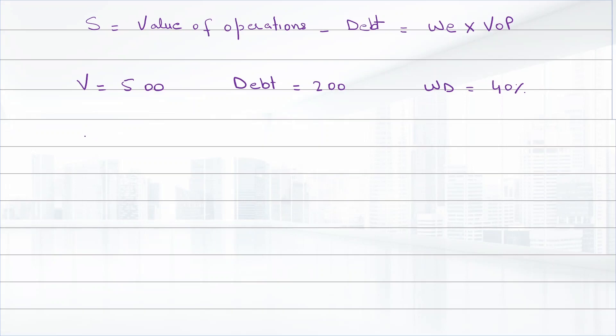So by using the first formula, S is equal to value of operations $500 minus $200, that is equal to $300 million.